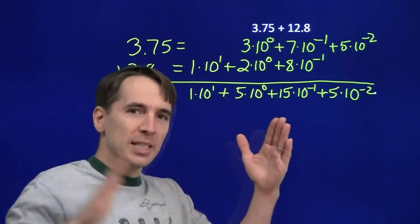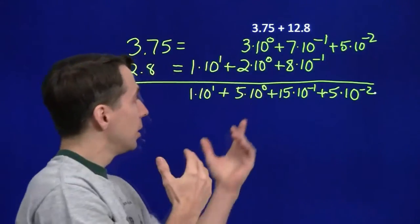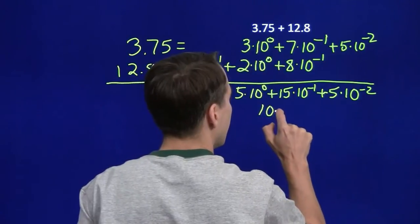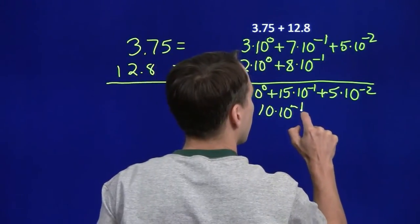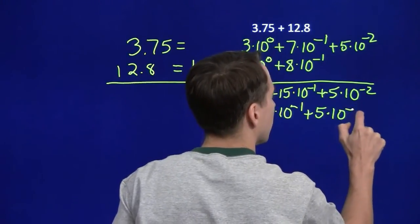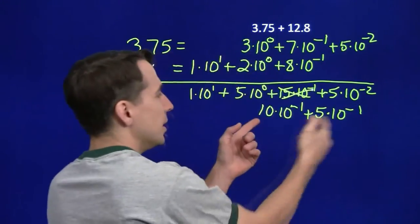Well, I can take my 15 and I can break that up into 10 plus 5. 10 tenths and 5 tenths. I'm going to split that up into 10 tenths and 5 tenths. And all I'm doing here is just breaking this up into two pieces here.